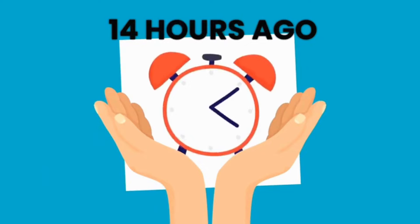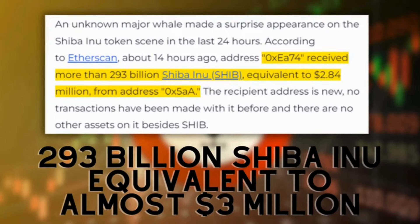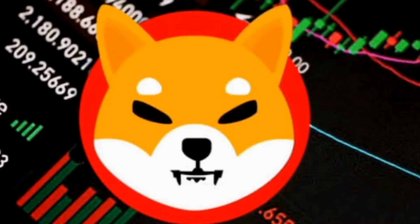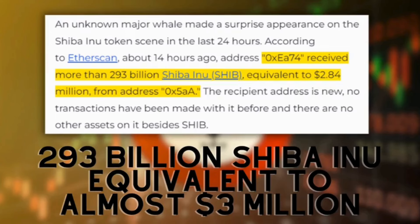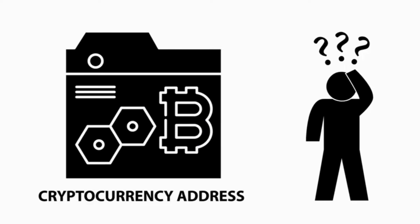Approximately 14 hours ago, a jaw-dropping transaction took place. An address received an astonishing 293 billion Shiba Inu tokens, equivalent to almost $3 million. This influx of tokens marks a substantial movement in the Shiba Inu ecosystem, sparking curiosity and speculation among enthusiasts and investors alike.